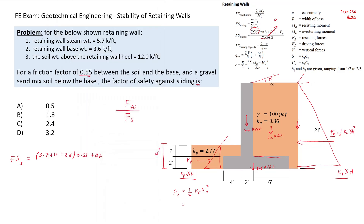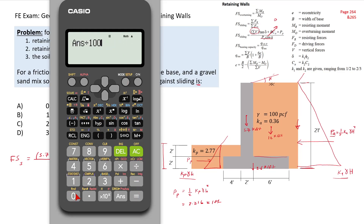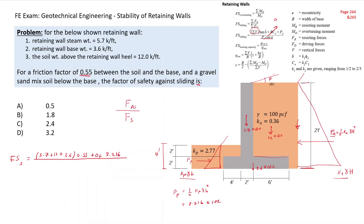Pa equals 0.5 multiplied by ka (0.36) multiplied by γ (100) multiplied by h² (21²), which equals 7938 pounds per linear foot. Dividing by 1000 gives 7.938 kip per linear foot. We multiply by cosine(0°) = 1 for the horizontal component.